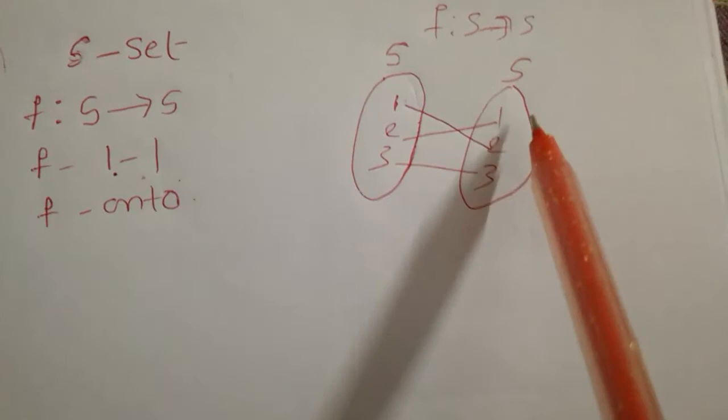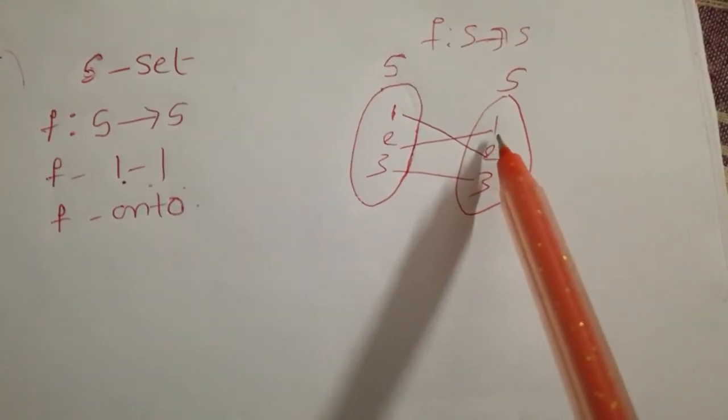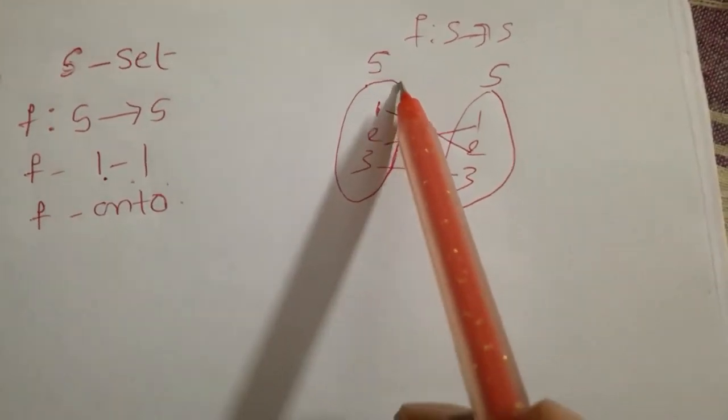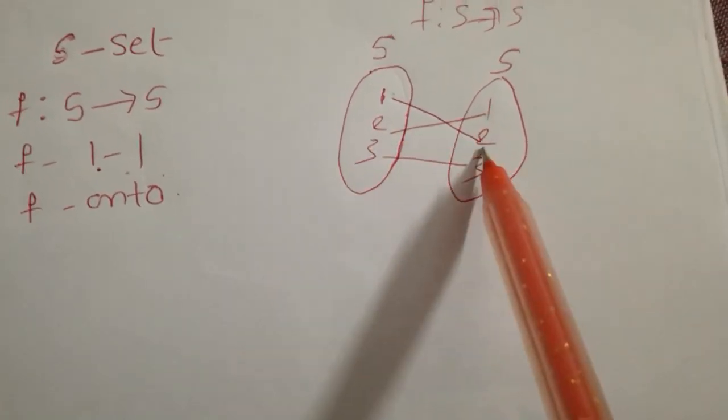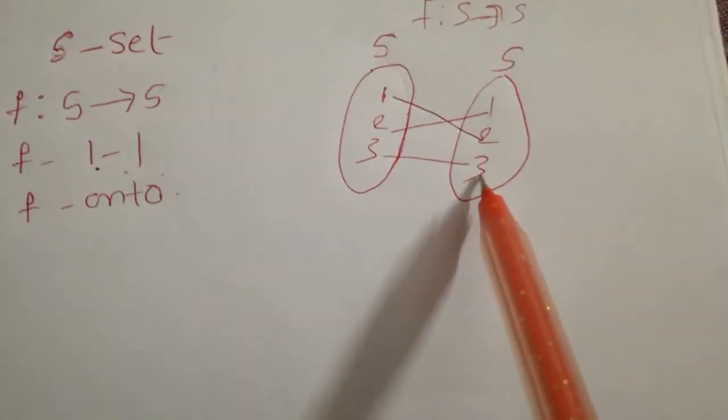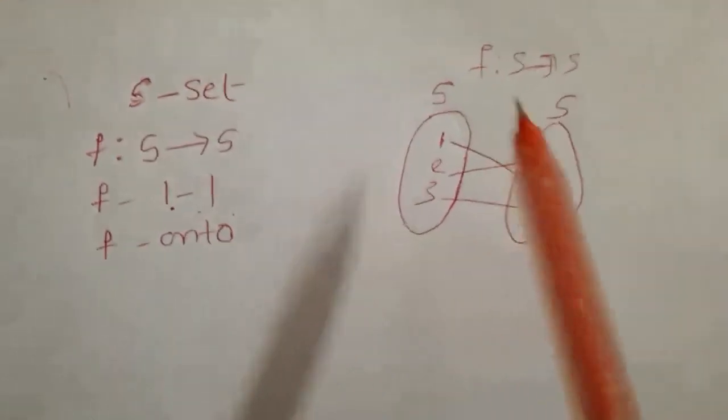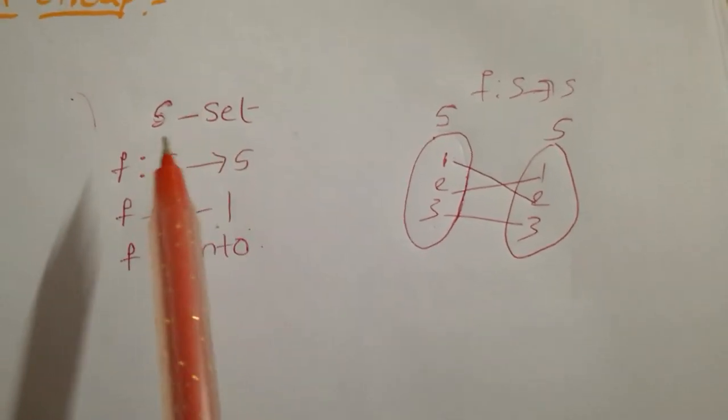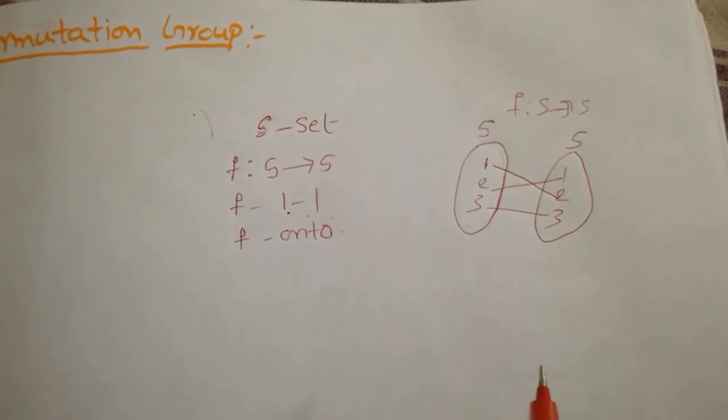That means every element of the codomain should have a pre-image in the domain. So 1 has pre-image 2, 2 has pre-image 1, and 3 has pre-image 3. So like this, if f is 1-1 and onto, then it is called a permutation group.